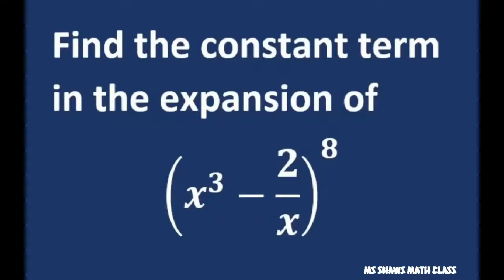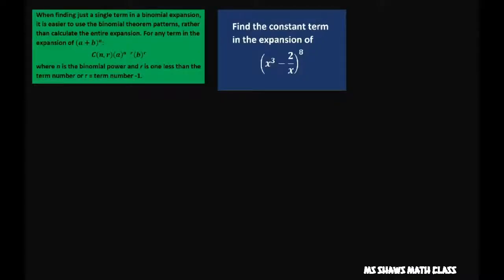Hi everyone, we're going to find the constant term in the expansion of x cubed minus 2 divided by x all raised to the 8th power. The constant term is the term in front of x to the zero. So we'll get started.